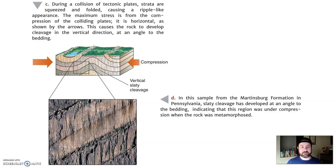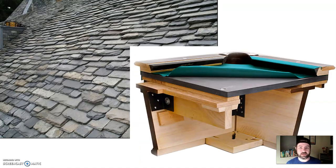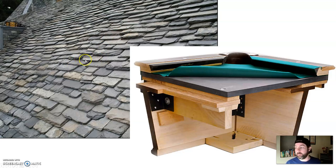Slaty cleavage develops perpendicular to the direction of compression — the direction of stress. For example, if compression is going this way, the slaty cleavage is formed vertically, so those two things are perpendicular, 90 degrees from one another. A great use of slate — things that have slaty cleavage — is in old slate roofs. Typically in Europe, they would have slate roofs made of metamorphic rock slate because it's nice and flat. Also, in fancier pool tables, the bottom of the pool table will be made of slate — it can form nice, flat, natural, hard surfaces.